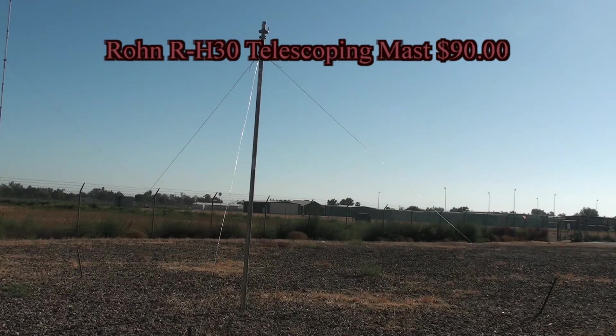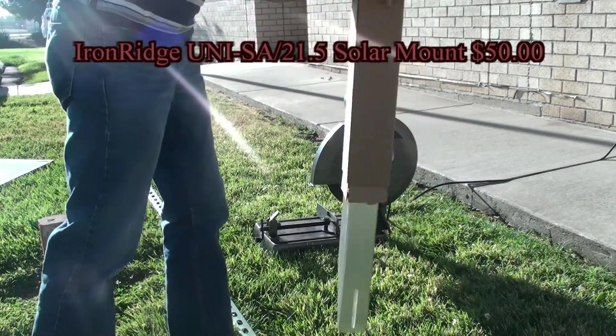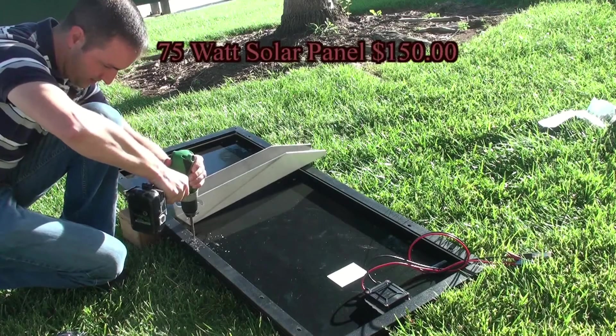First we start off with a 30 foot telescoping mast with guy wire supports. Now let's unpack and install our solar panel mount kit. Instructions on how to do this are included with the kit.